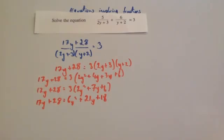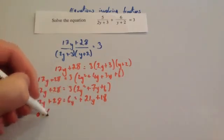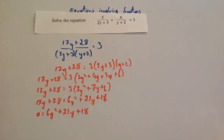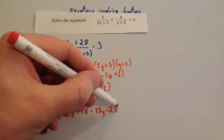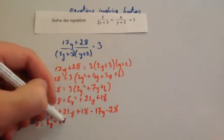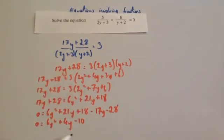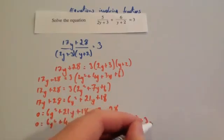Let's bring everything over to one side, keeping the y squared positive. Subtracting 17y and 28 from both sides gives 0 equals 6y squared plus 21y minus 17y plus 18 minus 28, which simplifies to 6y squared plus 4y minus 10. Because all terms are even, we can divide through by 2, giving 0 equals 3y squared plus 2y minus 5.